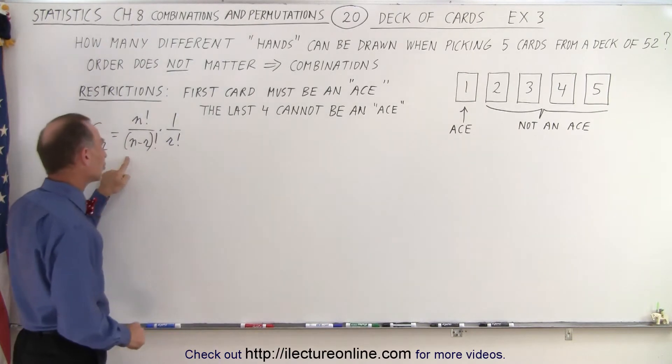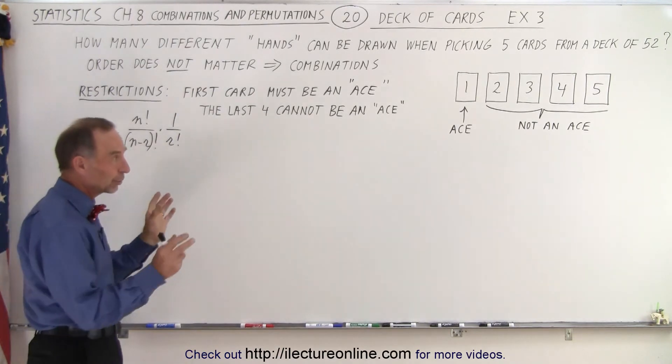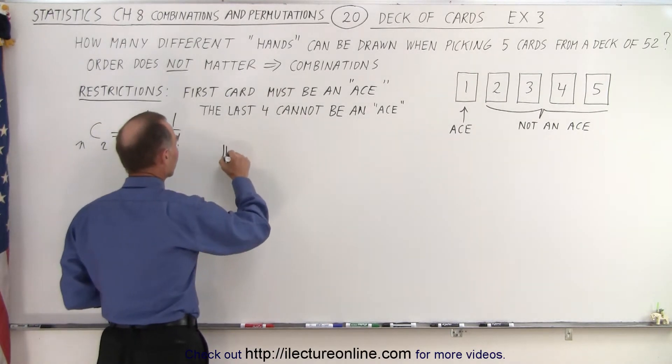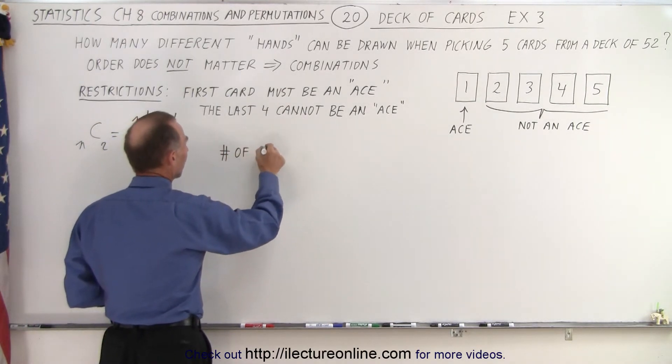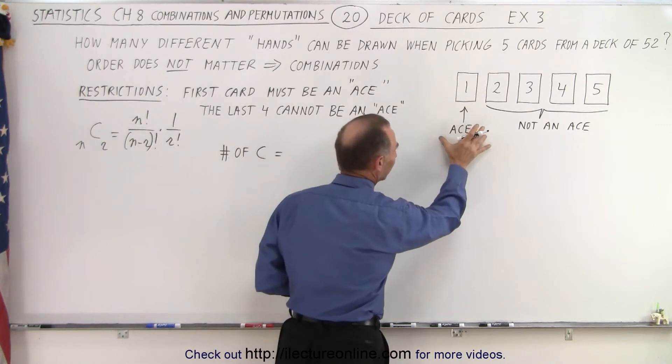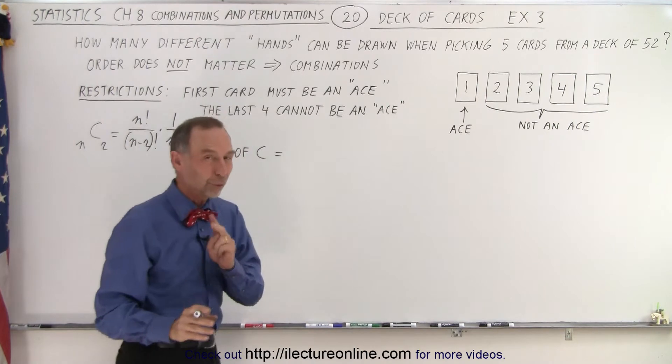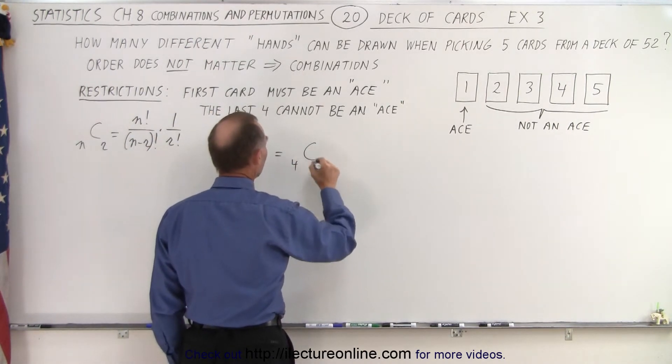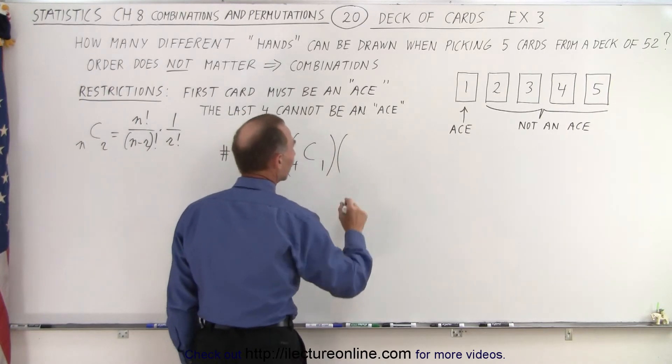Here's the general equation to calculate the combination. We're going to have two different factors that need to be multiplied together, so the number of combinations is equal to the number of combinations of picking the first card. Notice there's four aces and we're going to pick one, so that's the combination of four and one, and we're going to multiply that times...